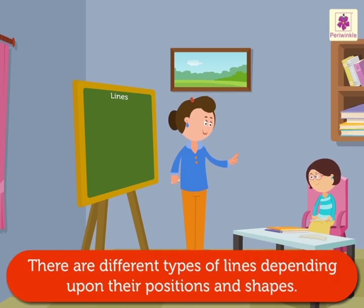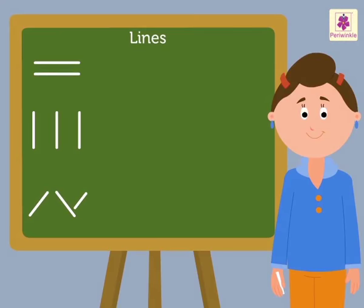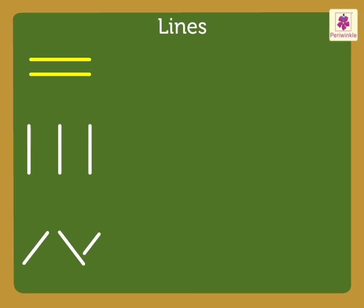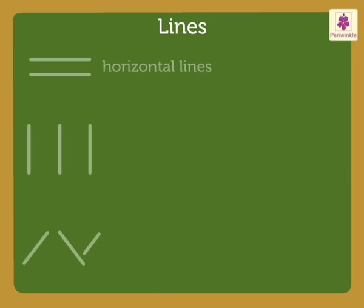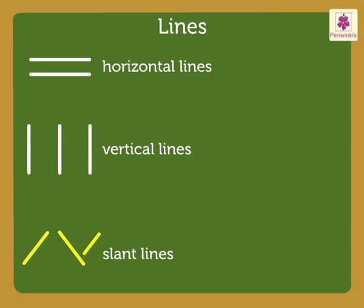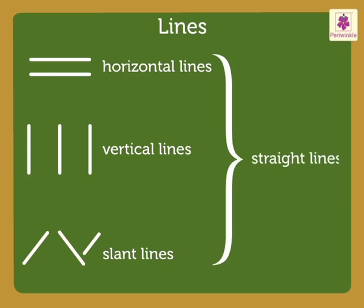There are different types of lines depending upon their positions and shapes. Look at the lines. These are horizontal lines. Your exercise book has horizontal lines. These are vertical lines. These are slant lines. All these are called straight lines.